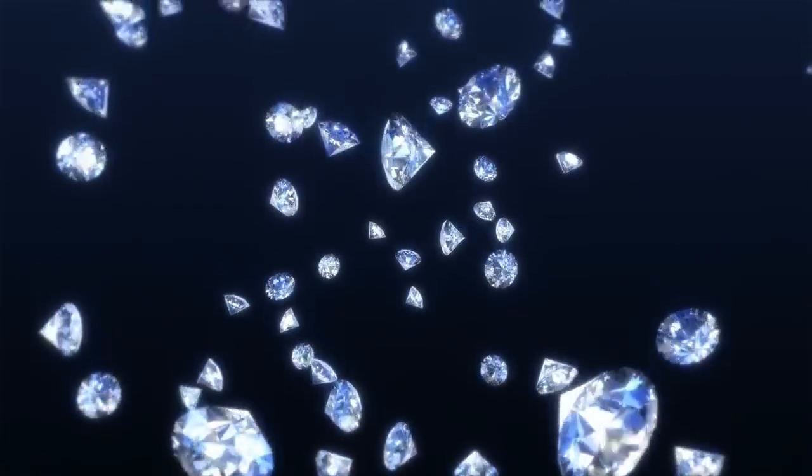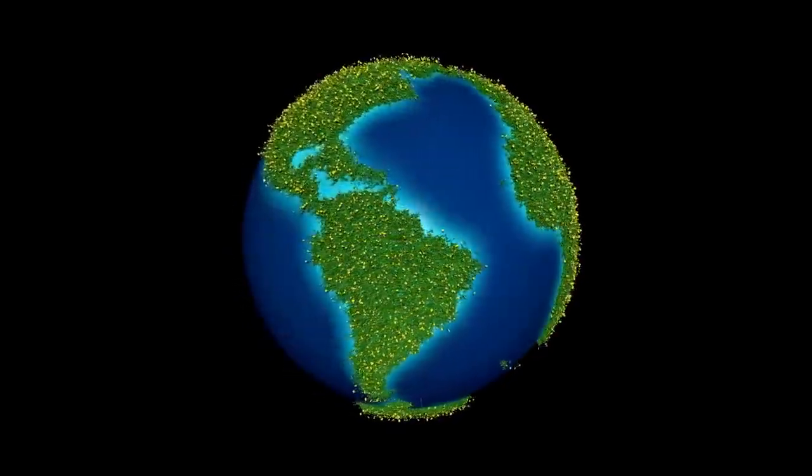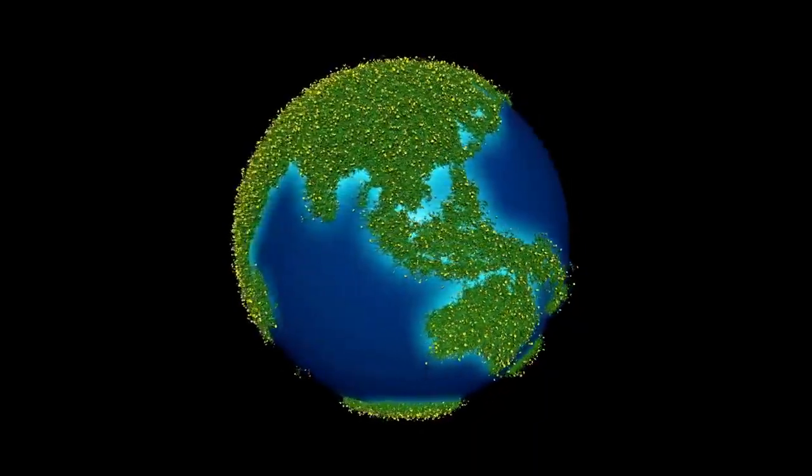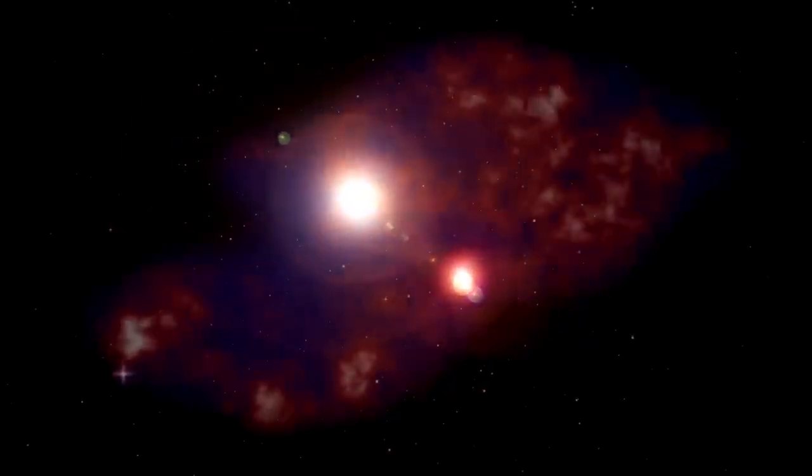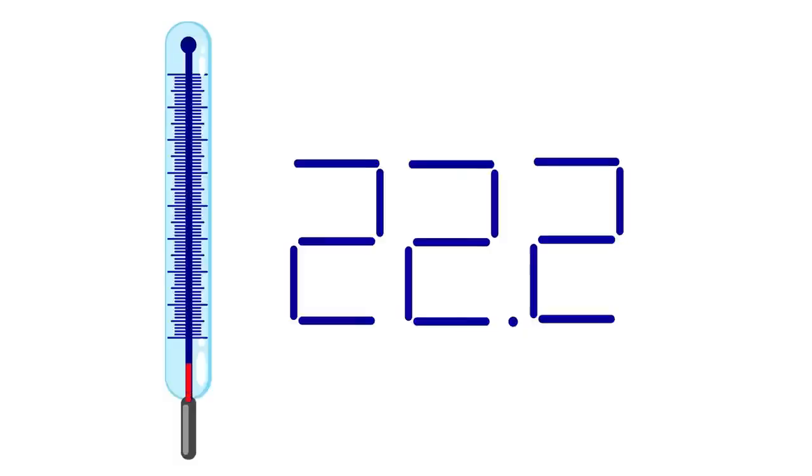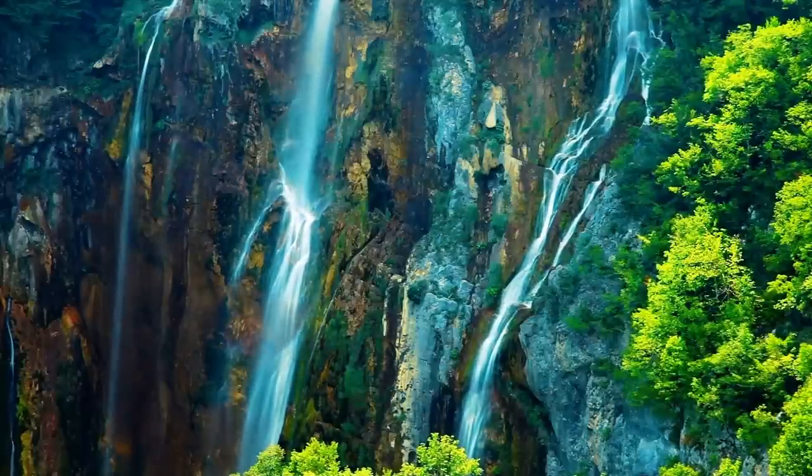Proxima Centauri b, often referred to simply as Proxima b, is a compelling subject for such investigation. It is classified as a super-Earth, a type of exoplanet that is more massive than Earth but lighter than Neptune or Uranus. These planets offer a unique glimpse into planetary formation and the potential for habitability. Proxima b orbits its star at an incredibly close distance of about 0.04856 astronomical units, completing a full revolution in just 11.2 Earth days. Its mass is approximately 1.07 times that of Earth, suggesting that it may have a rocky surface like our own planet.